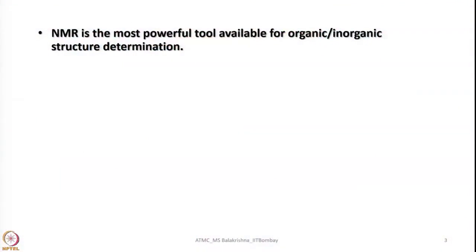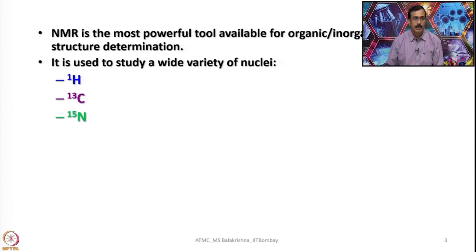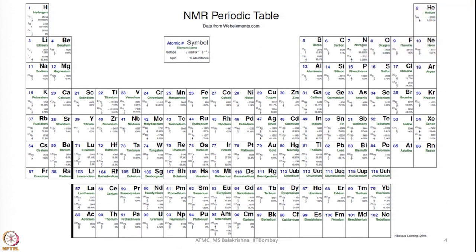NMR is the most powerful tool available for organic and inorganic synthetic chemists, biochemists, material chemists, and environmental chemists. In fact, all those who use chemicals — NMR is the most powerful tool to characterize compounds and determine structure. It is used to study a wide variety of nuclei, for example 1H, 13C, 15N, 19F, 31P, and many others. This periodic table shows all possible elements which have NMR active nuclei — plenty of them are NMR active. We can do NMR studies for most of these elements having isotopes which are NMR active.